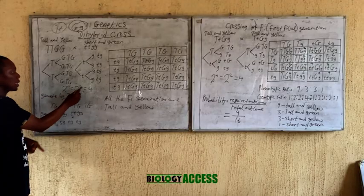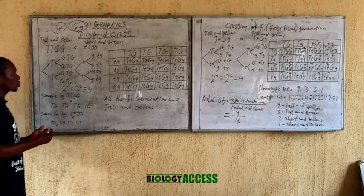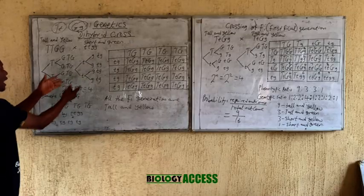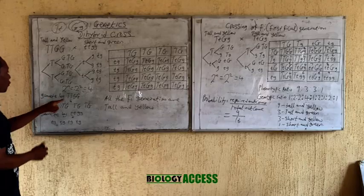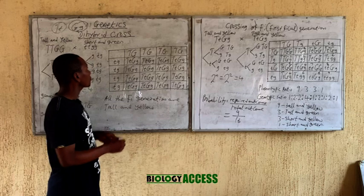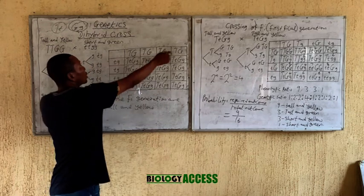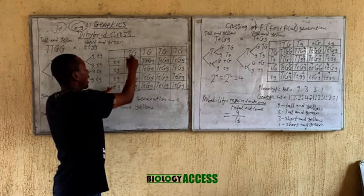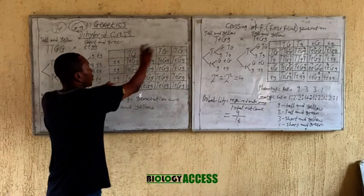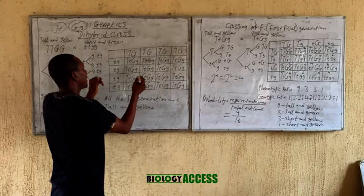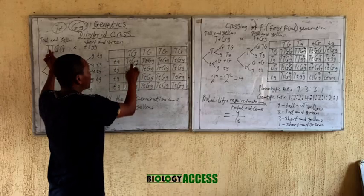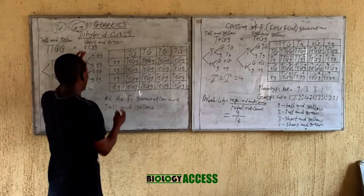To know the number of gametes produced by a single parent, the formula is 2 raised to the power n, which is 2 raised to power 2 equals 4. You do the same for both parents. Once you bring out the gametes for both parents you draw your Punnett square. I pick the gametes from the first parent and put them here, and the gametes from the second parent here.